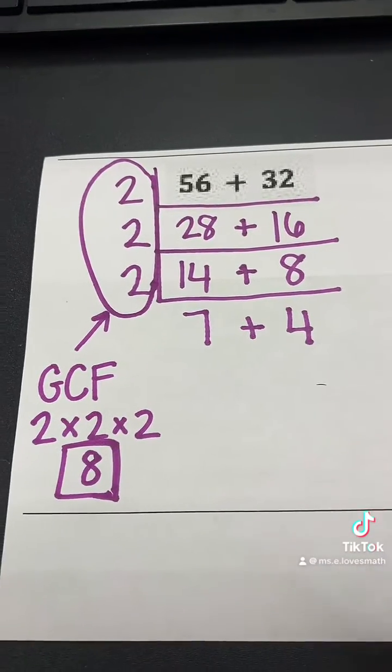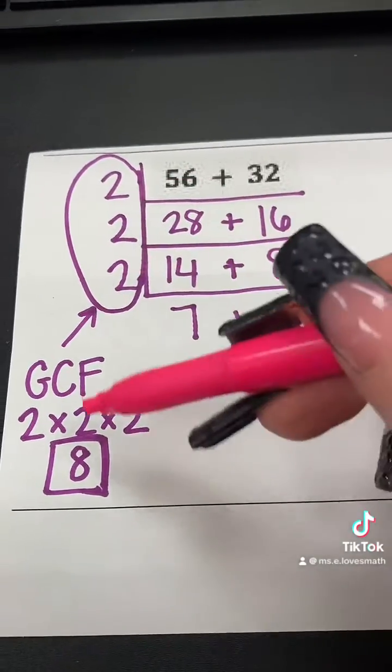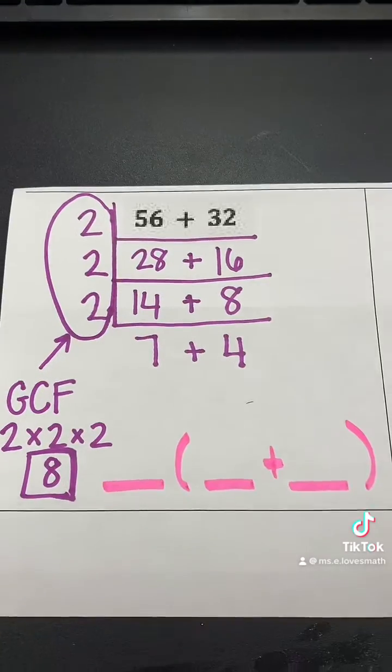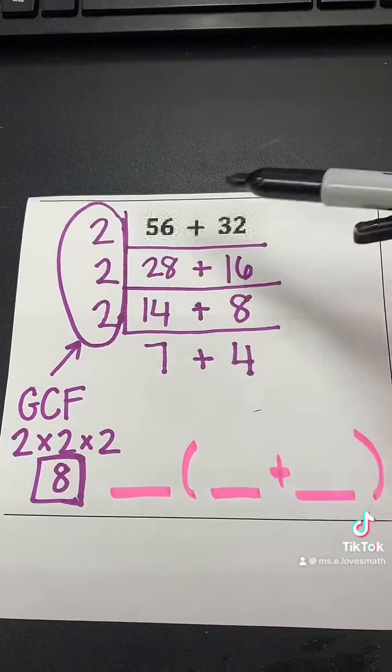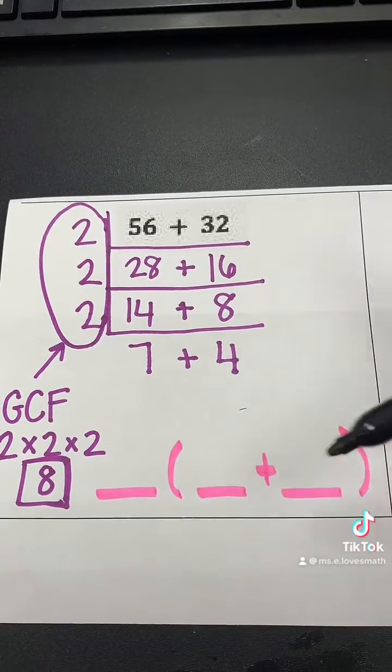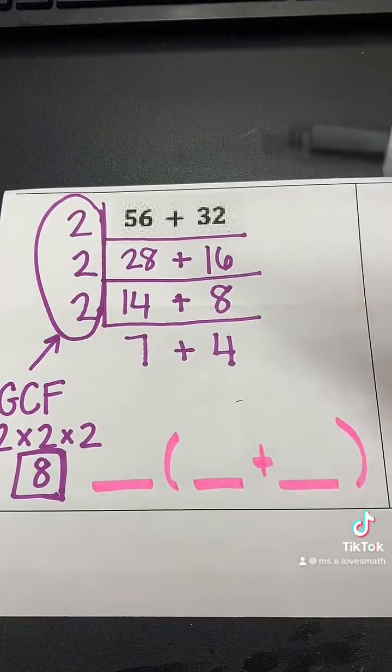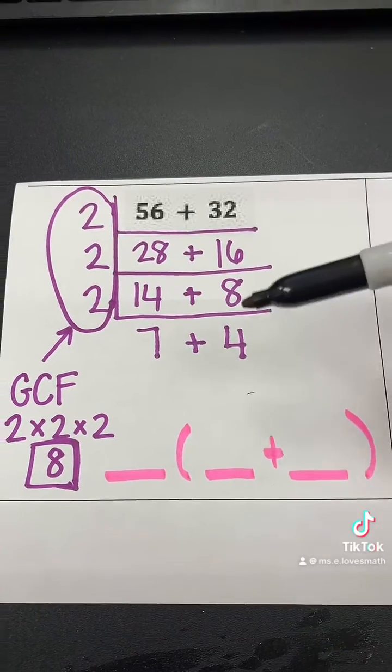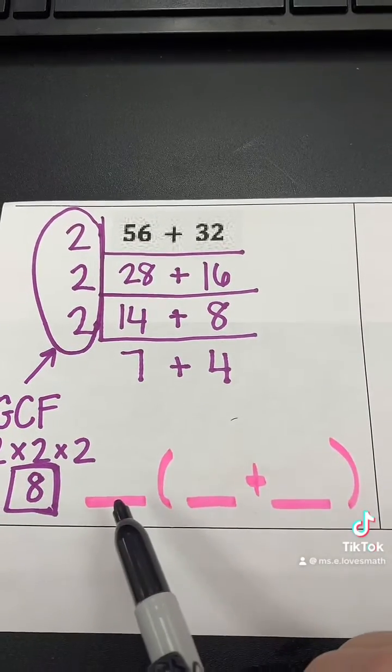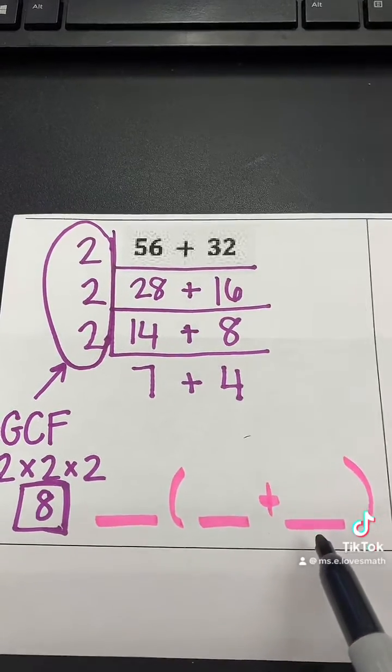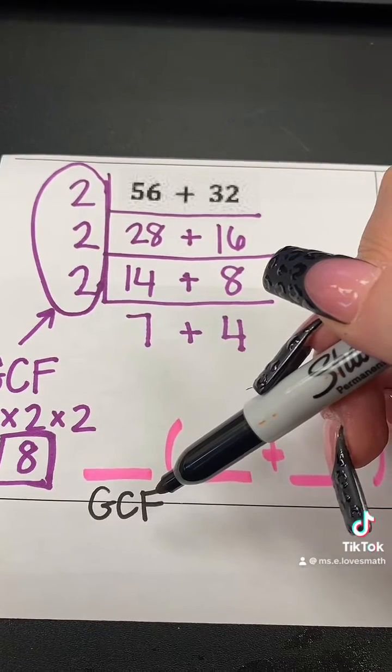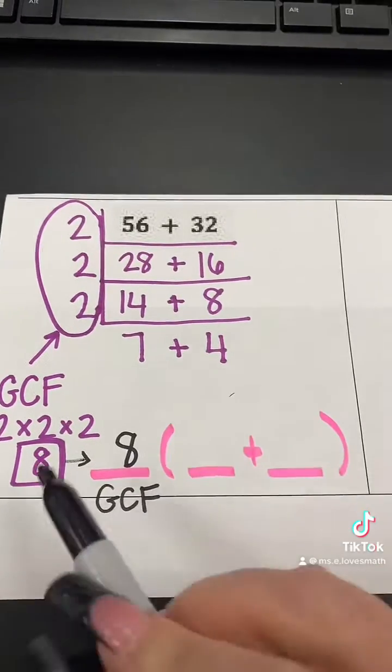So just like before, we find the GCF by multiplying all the numbers together. 2 times 2 times 2 is 8. So as I told you at the beginning, our goal was to rewrite this expression as a new expression, but we wanted our GCF, and we wanted to use the distributive property. So we wanted to put the parentheses back so that we were able to check it with the distributive property. So we want to have a number outside of the parentheses and 2 numbers inside of the parentheses. The number outside of the parentheses is going to be the GCF.